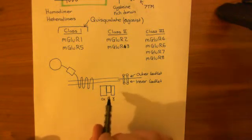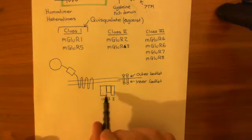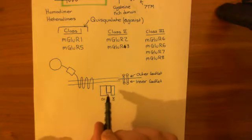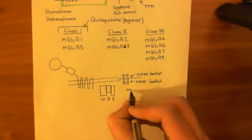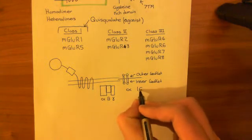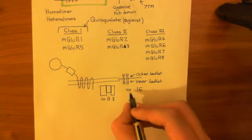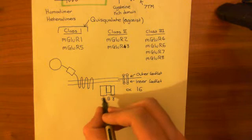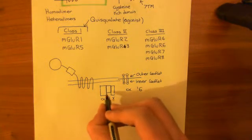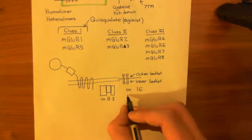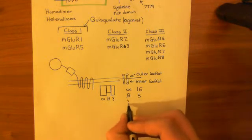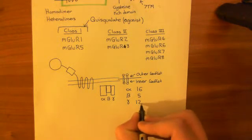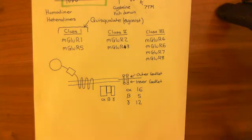Heterotrimeric G proteins basically consist of three subunits: an alpha subunit, a beta subunit, and a gamma subunit. There are 16 genes coding for the alpha subunits, so there are 16 possible alpha subunits that you can make your heterotrimeric G protein out of. There are five different beta subunits and 12 different gamma subunits, so there are quite a lot of heterotrimeric G proteins that you could, in principle, make.